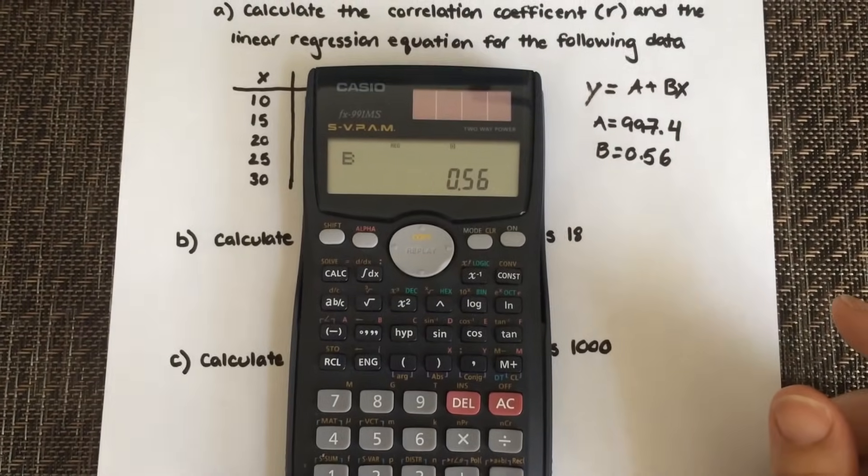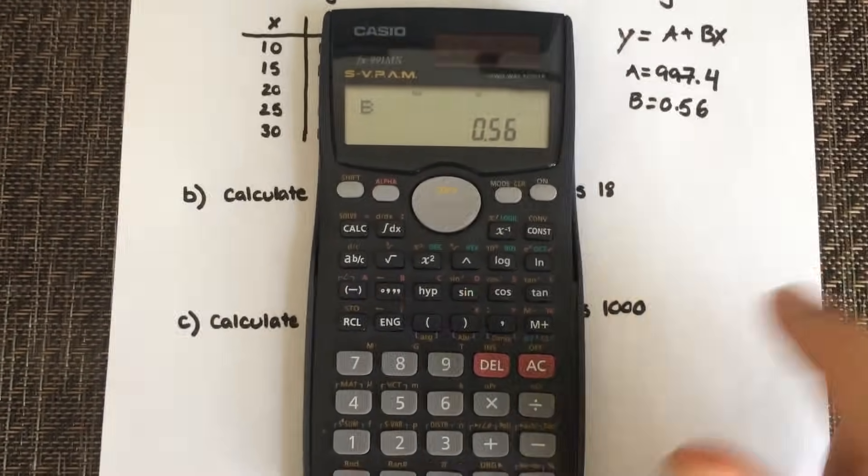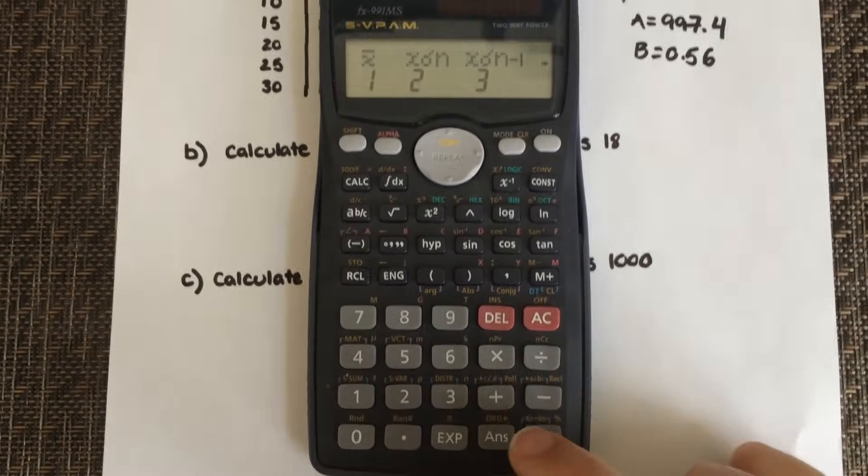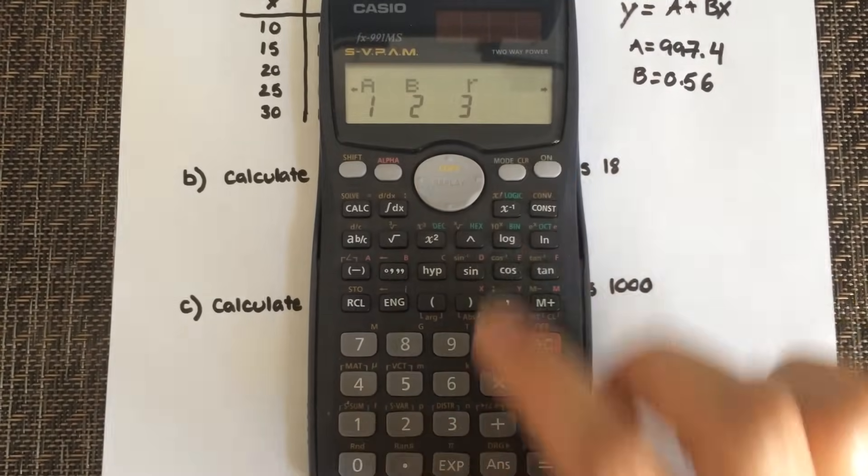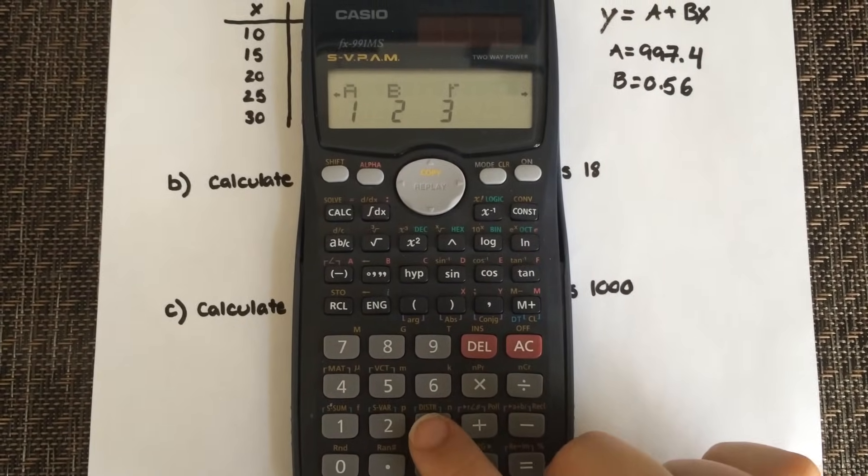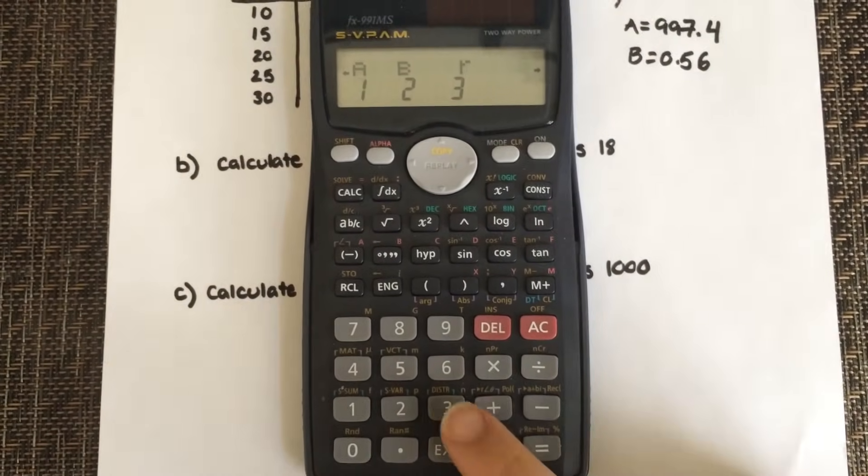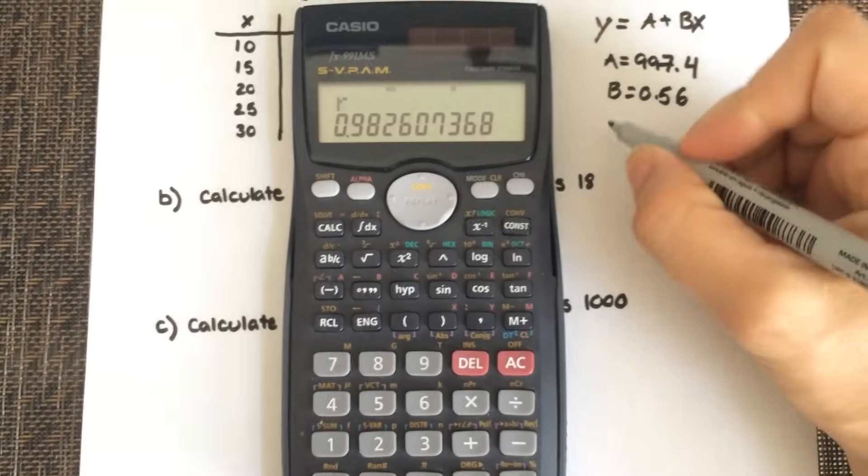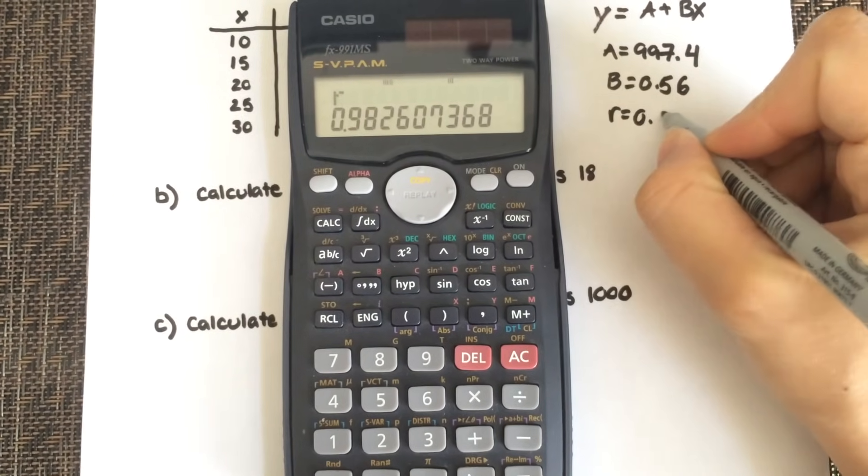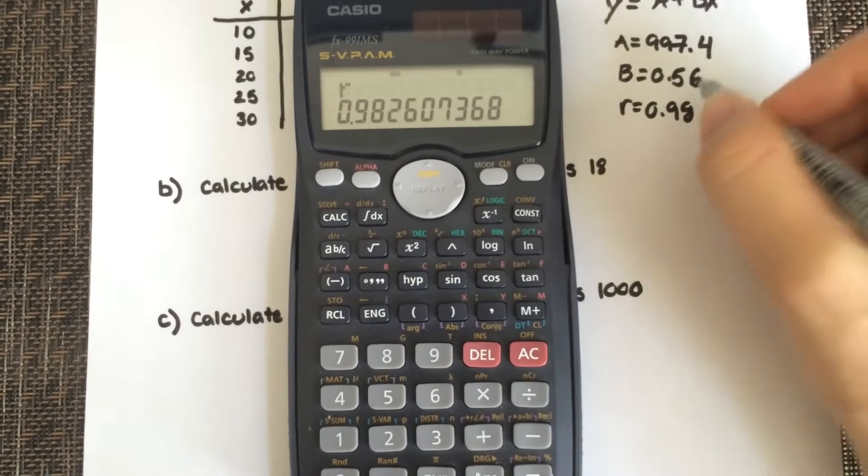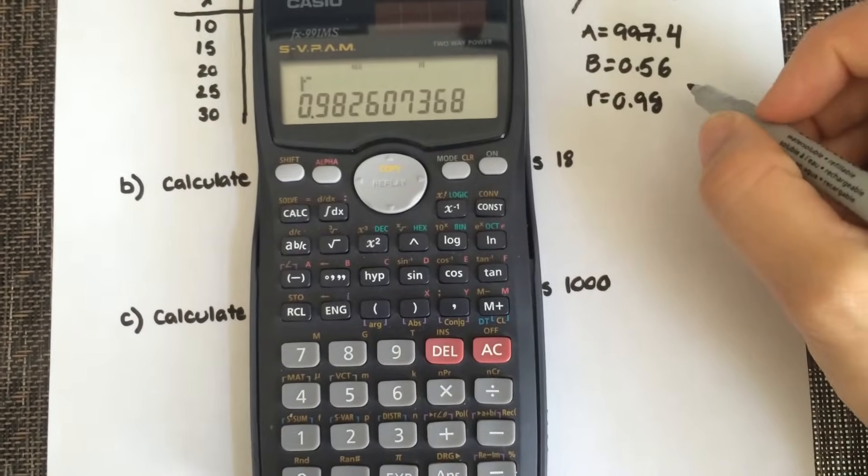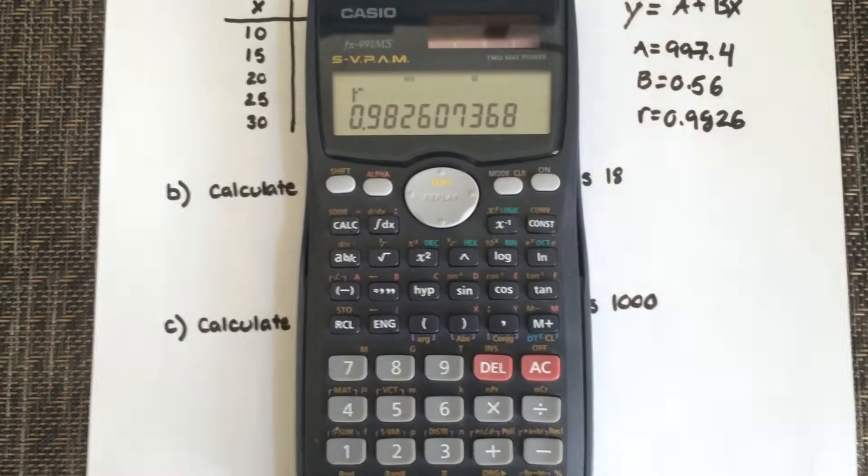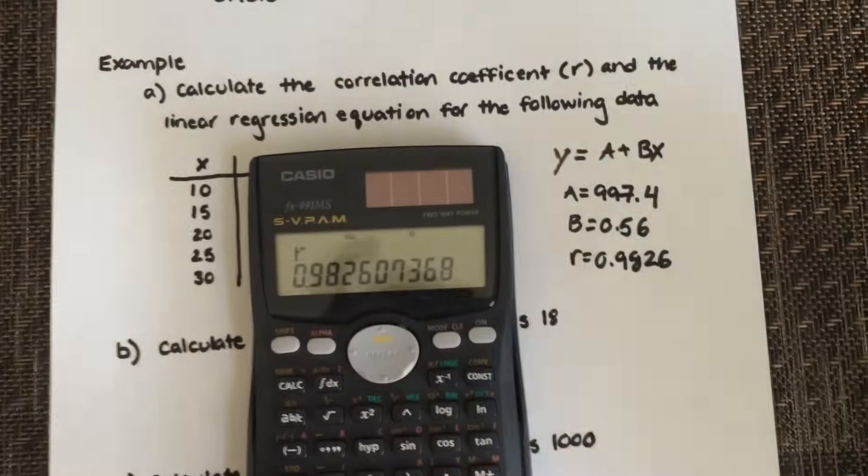I also want my correlation coefficient, which is r. So again, shift, 2, scroll, and hit 3, equals, and there you have your r value. So I'm just going to write down some of the decimals.